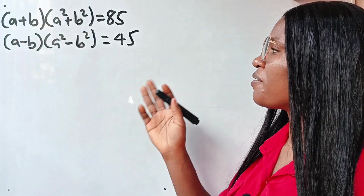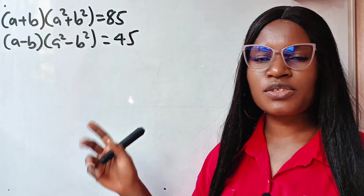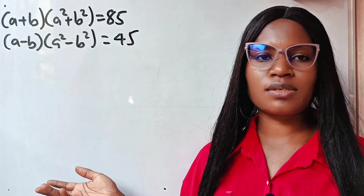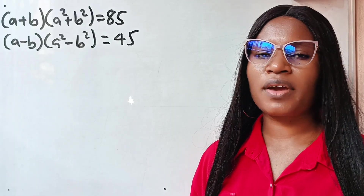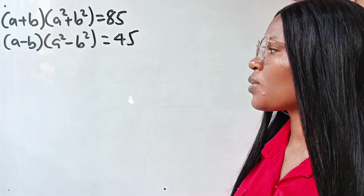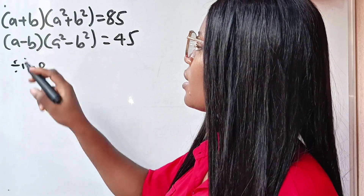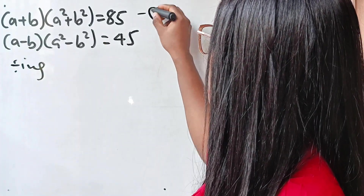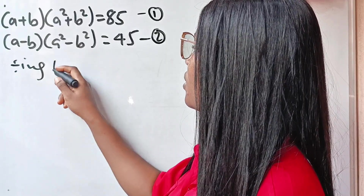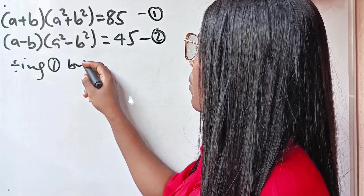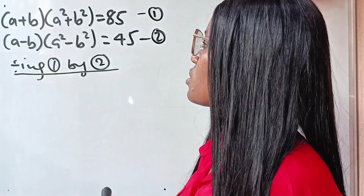Let's find the value of a and b. Welcome back to my channel. This looks tedious or difficult but it's very easy. To find the values of a and b, let's start by dividing. Let's call this equation one and this equation two, so let's start by dividing equation one by equation two.